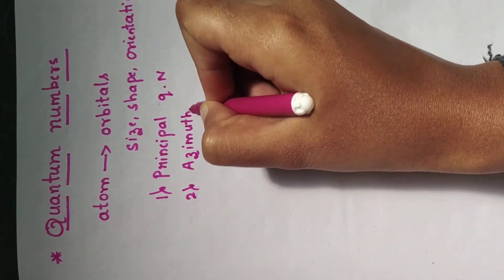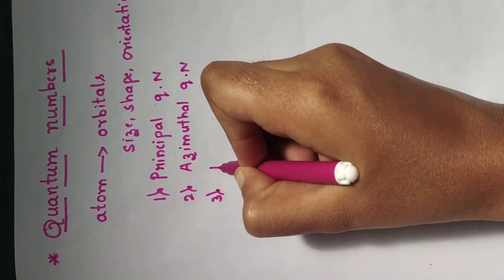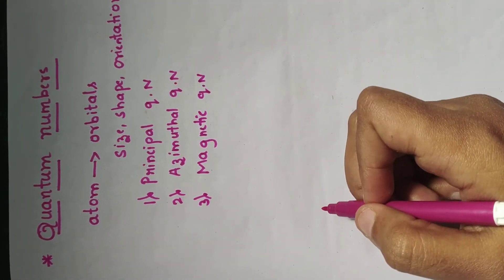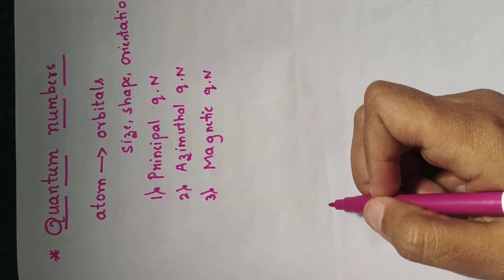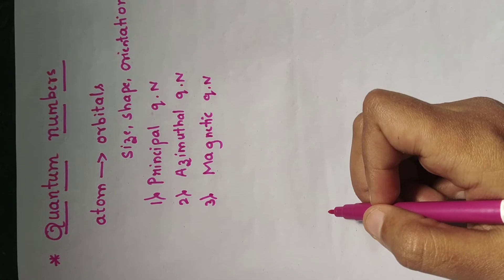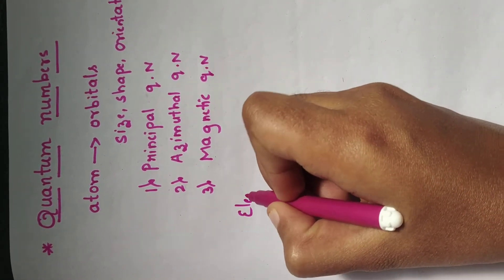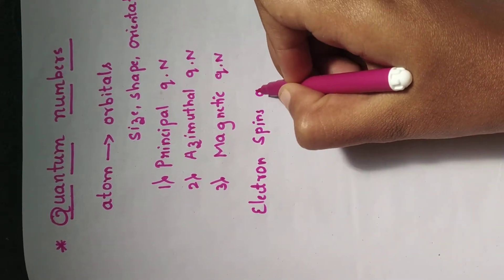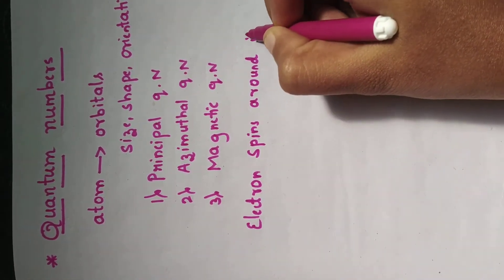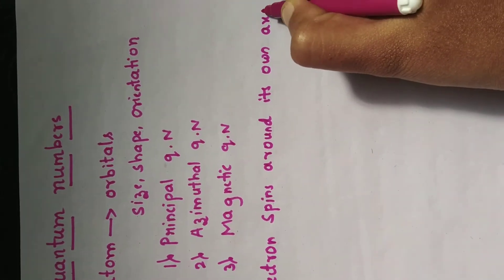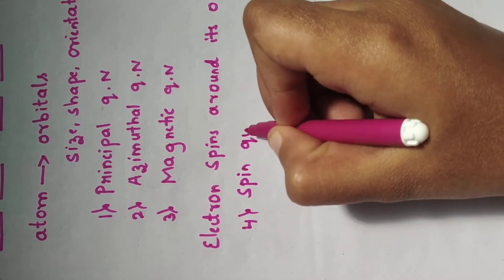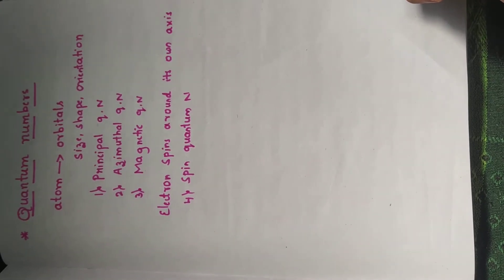We also have the azimuthal quantum number and magnetic quantum number. We know that electrons spin around their own axis, and this is described by the fourth quantum number called the spin quantum number. Now we shall study the first quantum number, that is the principal quantum number.